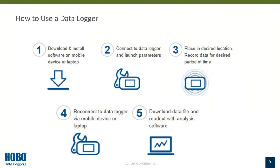How to use a data logger: Step one would be to download and install your software on a mobile device or computer. After that, you would connect the data logger and launch the parameters. Then you'd place the data logger in the desired location and record data for a set period of time. Once you're done with the deployment, you reconnect the data logger to your mobile device or laptop, then download and read out the data file with analysis software.